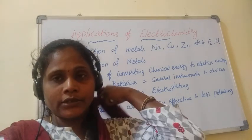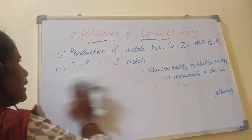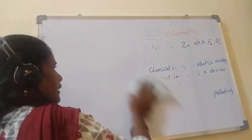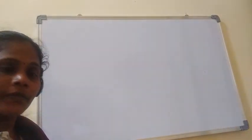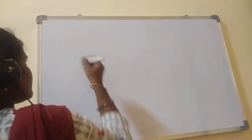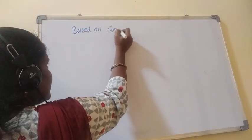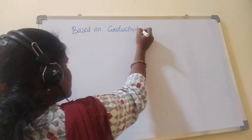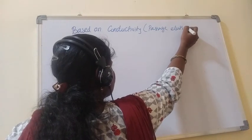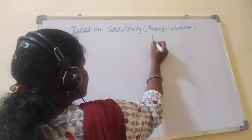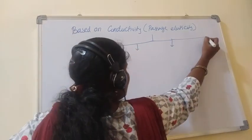Now, based on conductivity — that is, the passage of electricity through substances — substances are classified into four types.